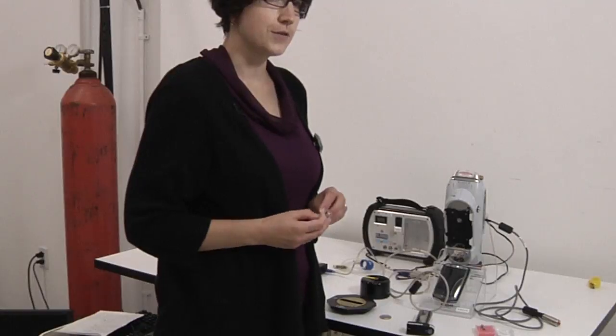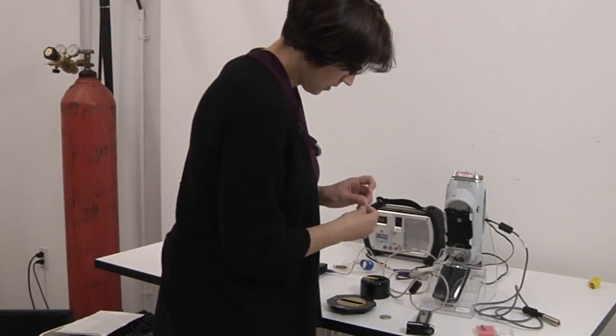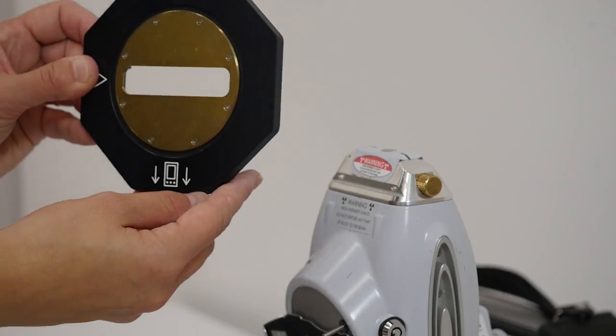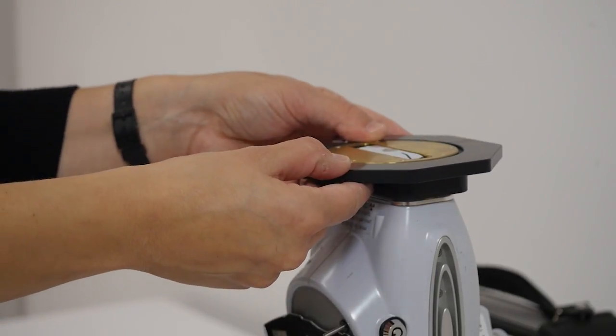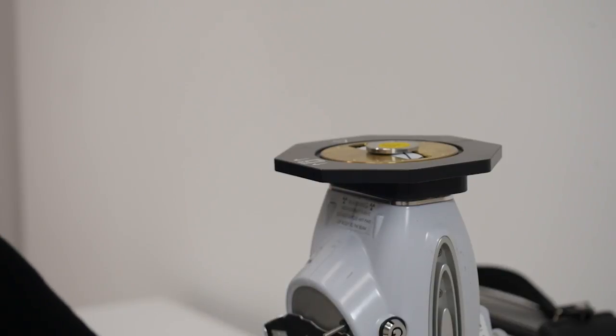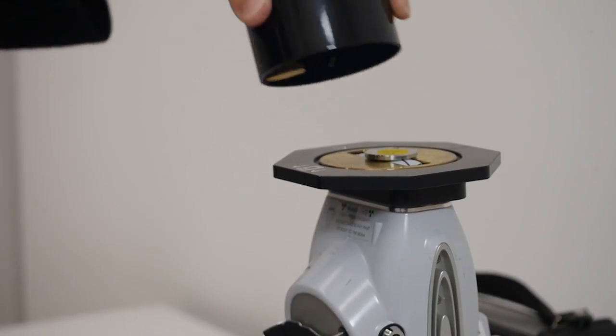I'm going to insert the key in the front of the unit. I'm going to place the sample table on the top. And for this demonstration, we're going to put a stainless steel alloy coupon on the aperture of the instrument. And then we're going to cover it with this cap.